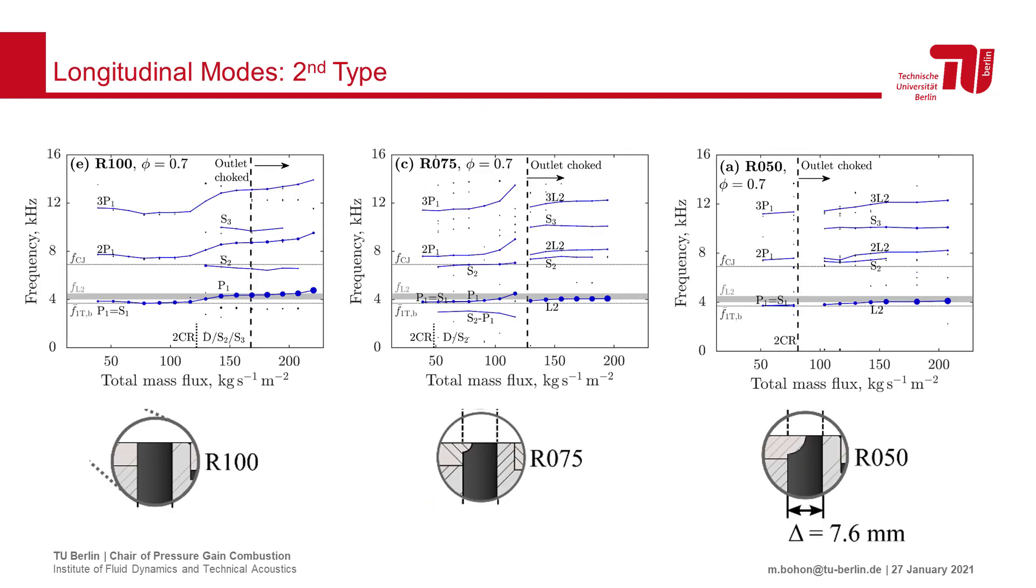When we examine the operating mode as a function of the reactant mass flux for different outlet restrictions, we observe that the L2 mode occurs once the mass flow is sufficient to choke the outlet when a restriction is used.